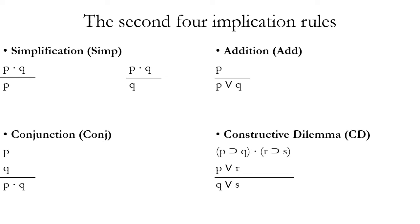Here's a summary of the second four implication rules. Simplification allows you to start from a conjunction and prove one of the conjuncts. Conjunction allows you to start from separate propositions and join them together in a conjunction. Addition allows you to introduce a wedge after any proposition you know is true, with any disjunct after the wedge. Constructive dilemma allows you to start from a conjunction of conditionals and a matching disjunction, and conclude another disjunction whose disjuncts match the consequents.